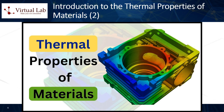5. Thermal resistivity. This is the reciprocal of thermal conductivity and it measures a material's resistance to heat flow. It is typically measured in meter Kelvin per watt (mK/W). 6. Melting point and boiling point. These are the temperatures at which a material changes state from solid to liquid (melting point) and from liquid to gas (boiling point). These points can tell us a lot about the thermal stability of a material.